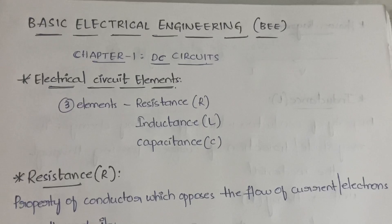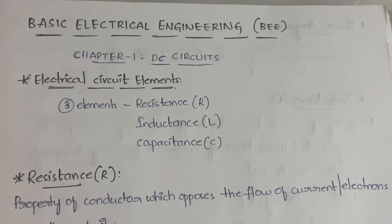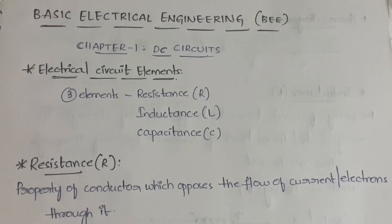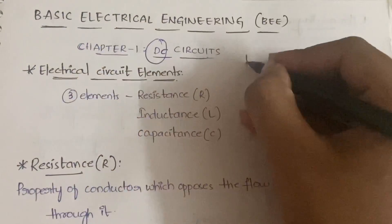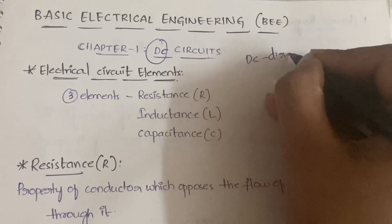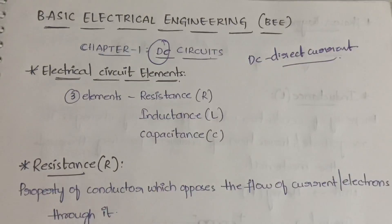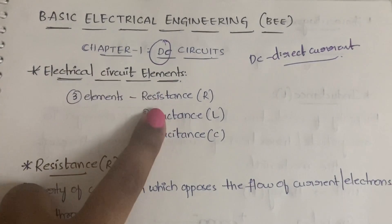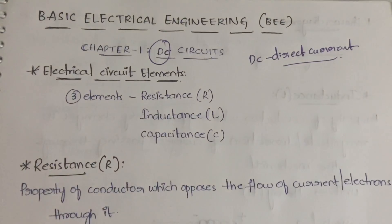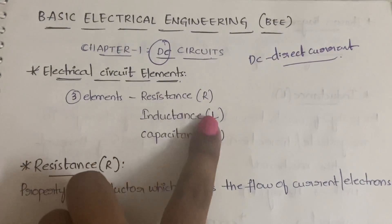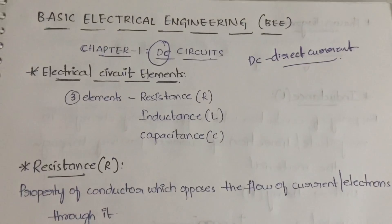In this video, Chapter One — DC Circuits — we are going to learn about basic electrical circuit elements. DC stands for direct current and AC for alternating current. In DC circuits we have three elements: resistance, inductance, and capacitance, denoted by R, L, and C respectively.